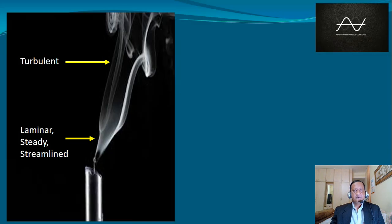What is turbulence? If you blow out a candle, the smoke that comes out of the wick initially flows in a steady manner, we call it laminar or streamlined.